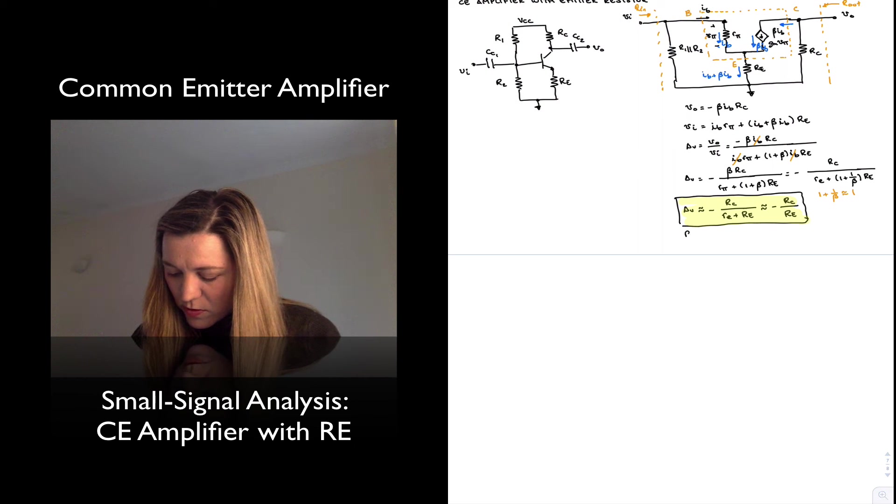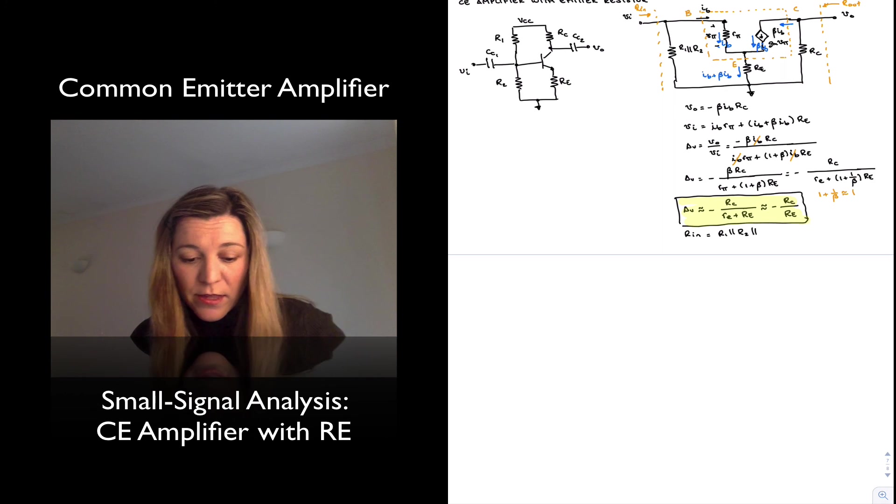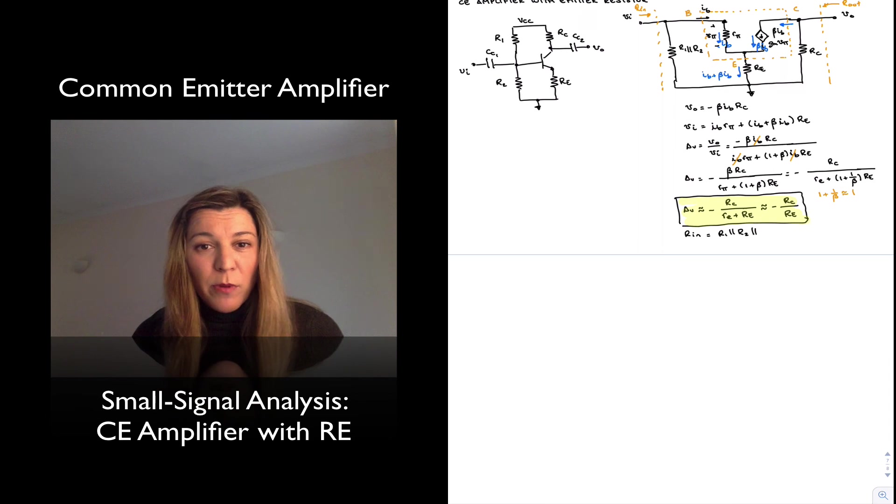And so r_in will be equal to R1 in parallel with R2 in parallel with, and it's going to be r_pi plus r_e. Remember, r_pi was equal to beta times little r_e.